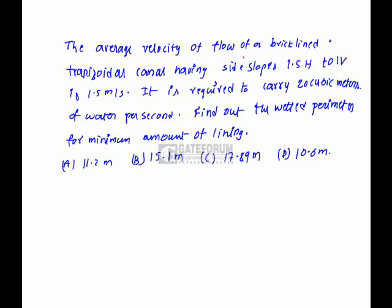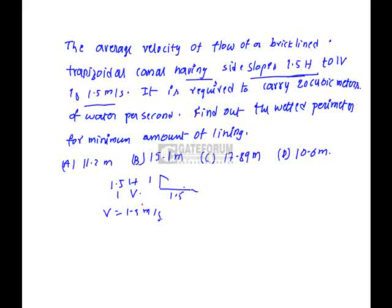The average velocity of flow of a brick-lined trapezoidal canal having side slopes of 1.5 horizontal to 1 vertical. The velocity V is given as 1.5 meters per second. It is required to carry 20 cubic meters of water per second, that is discharge 20 cubic meters per second. Find out the wetted perimeter for minimum amount of lining. We have to find out the wetted perimeter P.